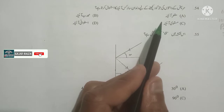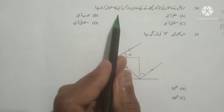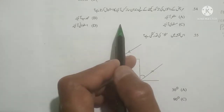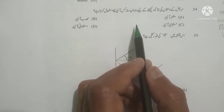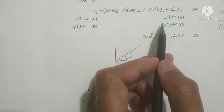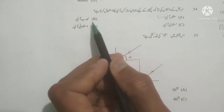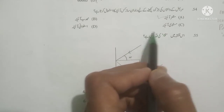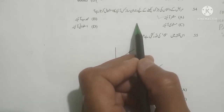Next question: Mareez ke daato ki jaro ko dekhne ke liye dandan saaz kis aina ka istamal karta hai? Which mirror is used by the dentist to see the root of the patient's teeth? The dentist uses a concave mirror. Here the option given in Urdu is mukar aina, which means concave mirror — it is correct. Mahdab aina means convex mirror, mastavi aina means plain mirror, astavani aina means cylindrical mirror. Option A is correct.